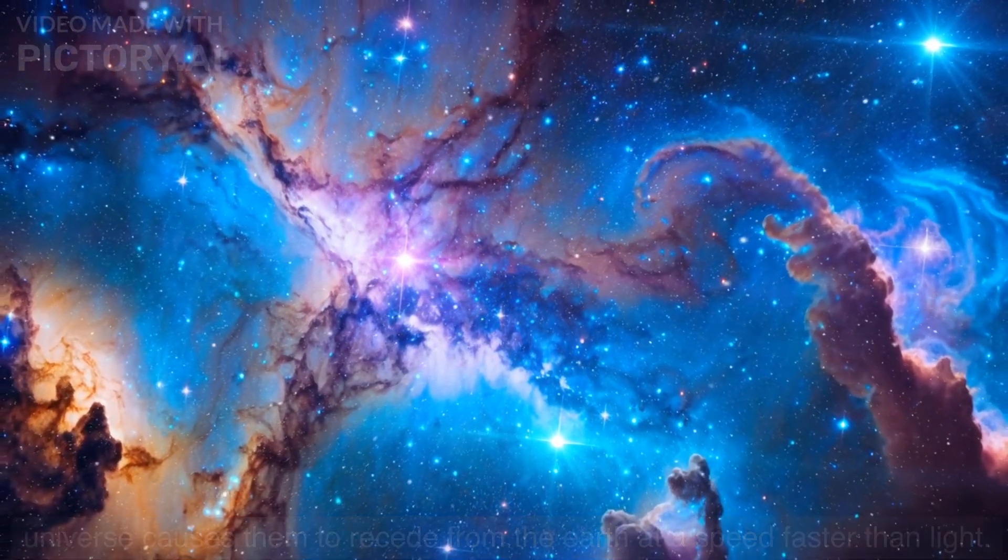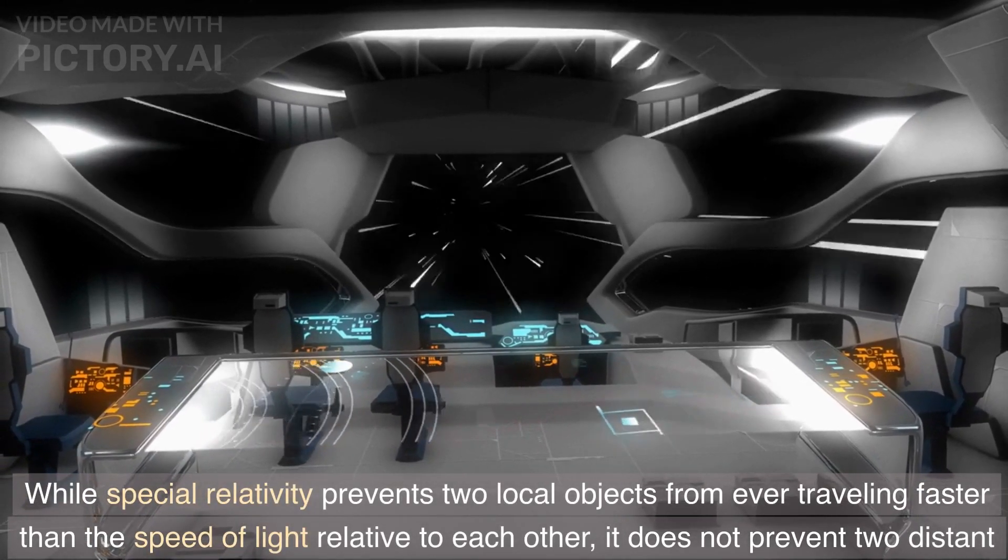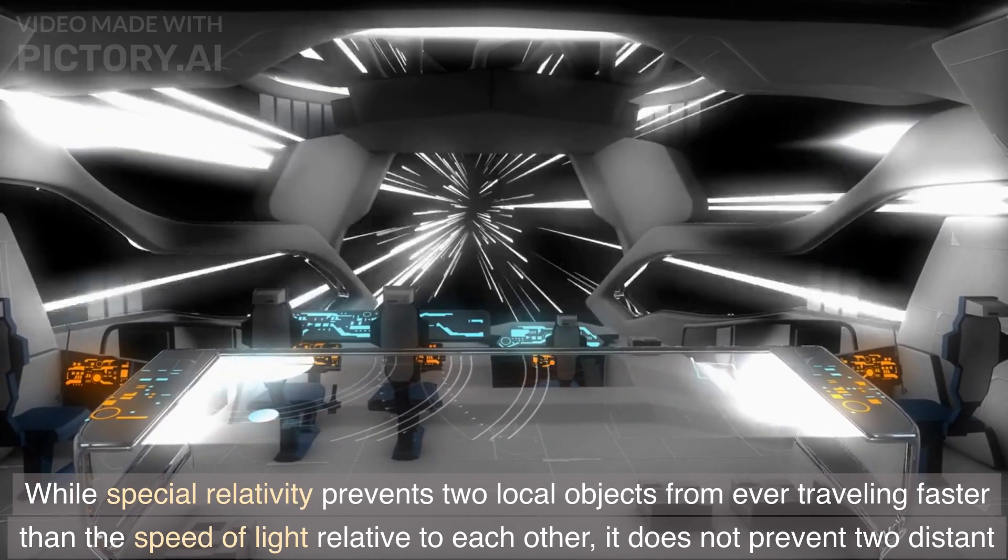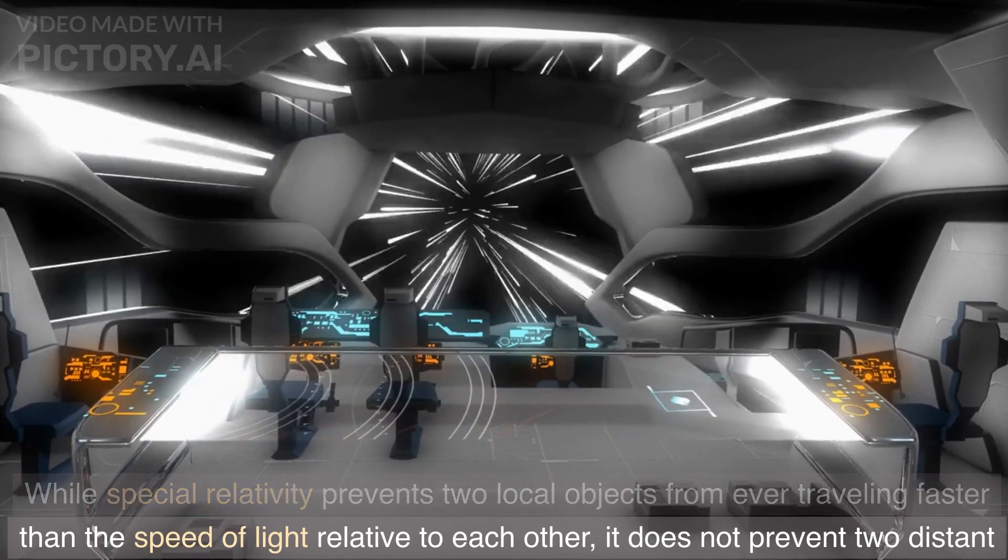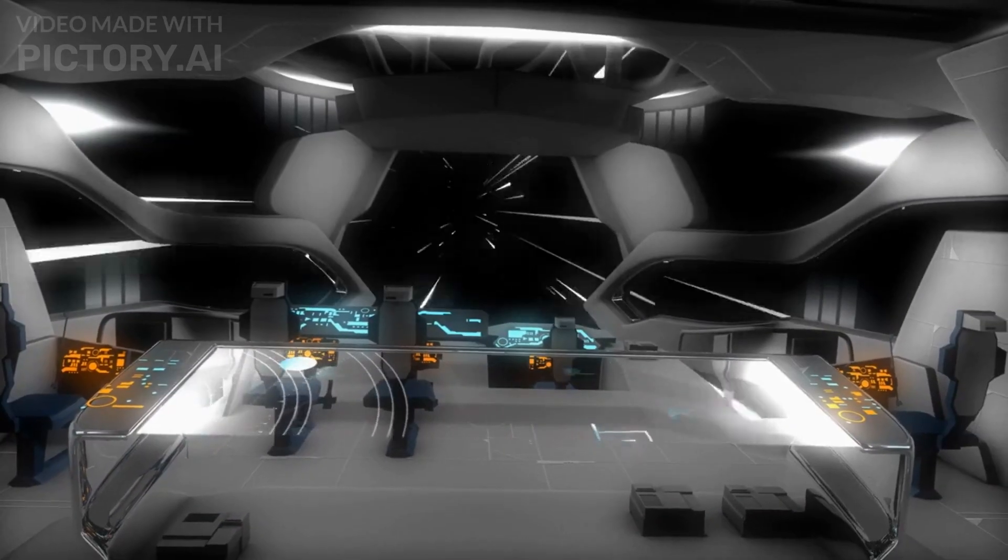While special relativity prevents two local objects from ever traveling faster than the speed of light relative to each other, it does not prevent two distant objects from traveling away from each other faster than the speed of light as a result of the expansion of the universe.